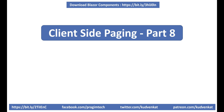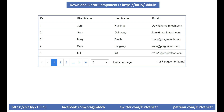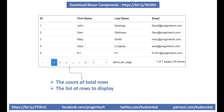We discussed implementing client-side paging in part 8 of this video series. I'll include the link to the complete course page in the description box below. Here's the important point to keep in mind: to implement server-side paging, the data grid needs to know two things — the count of total rows and the list of rows to display. The data grid uses the total count of rows and the page size to calculate the number of pages to display in the pager in the data grid footer.